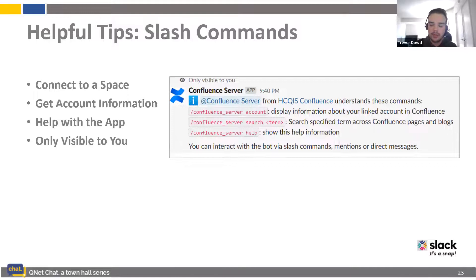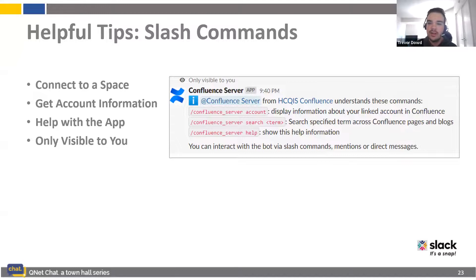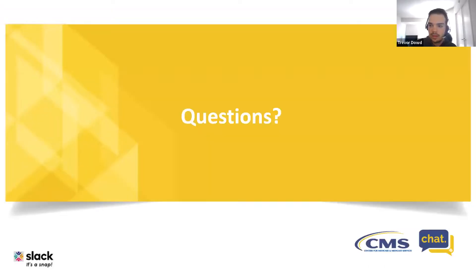There are also some helpful slash commands on the Slack side. After setting up the integration in Confluence, you can go to Slack and pull up these slash commands at any time if you forget them. You can type these slash commands in any channel that is integrated, and they'll provide help with the server, the account, and you can also search across the Confluence pages integrated in that channel using the slash search command.